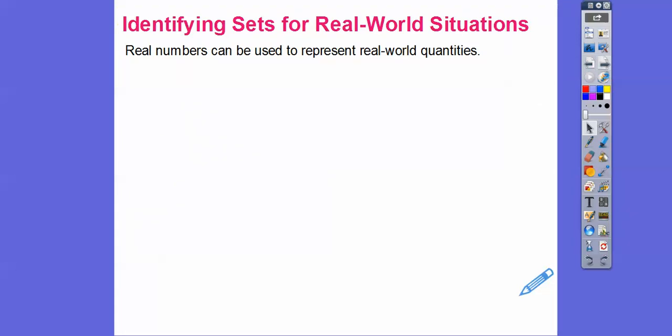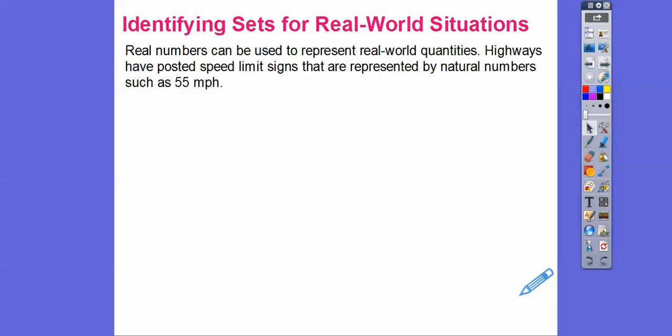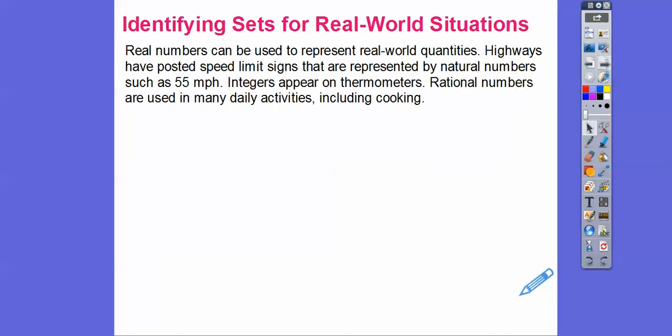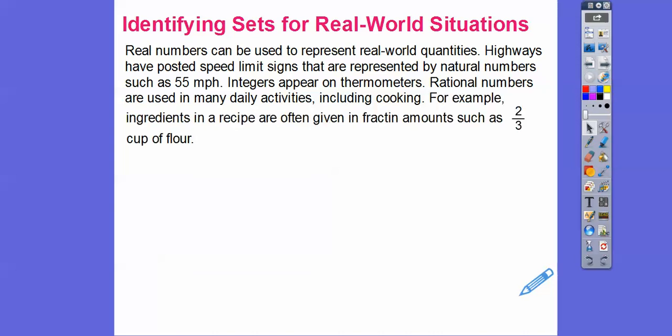Identifying sets for real-world situations — real numbers can be used to represent real-world quantities. Highways have posted speed limit signs that are represented by natural numbers, like 55 miles per hour. Integers appear on thermometers — it goes from 50 degrees to maybe negative 12 degrees. Rational numbers are used in many daily activities, including cooking.